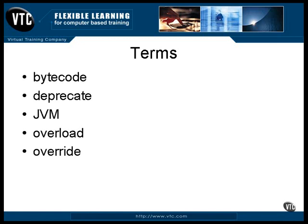You can define a variable of the same name as the one in a larger scope, such as the one inherited from the superclass. The local variable is the one used, and it's said to override the one in the outer scope. This is the action of an object to retain its internal data from one instance of itself to the next. Often, relational databases are used to contain object data that is persistent.